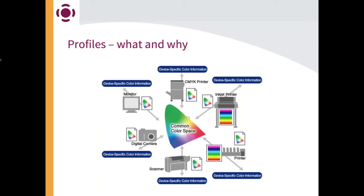If you look in the middle of this diagram, you see that same elliptical-looking diagram that Steve showed before, which shows the color space. In this case, it's what we're calling a translation color space or common color space, which is a LAB space. We're not going to get into great technical detail on that, other than to know that it's a fairly wide space so that we can make this transfer.